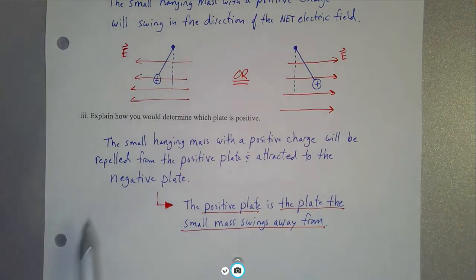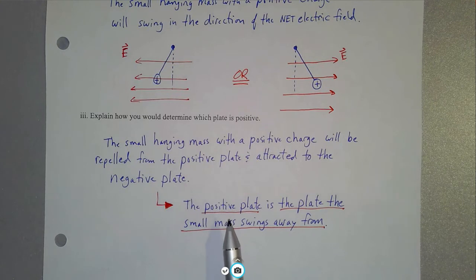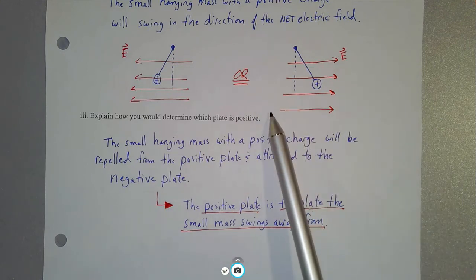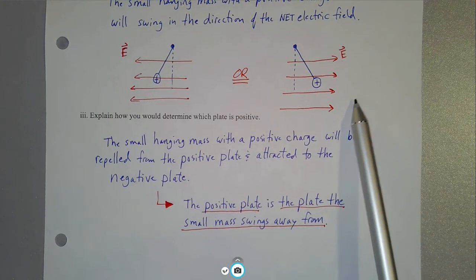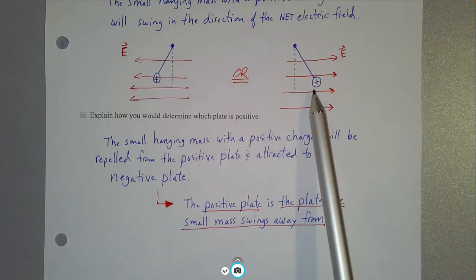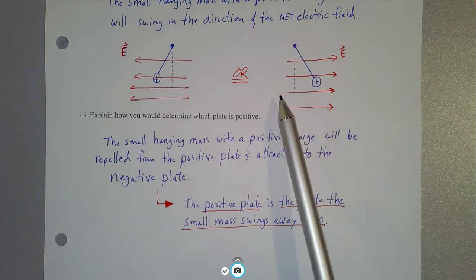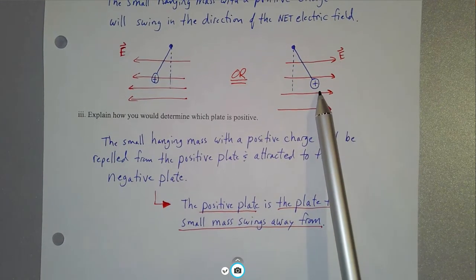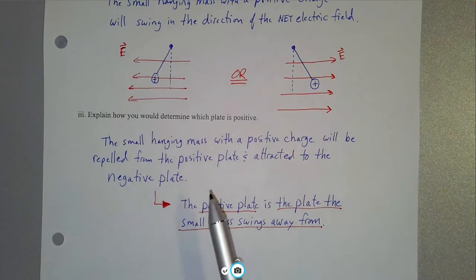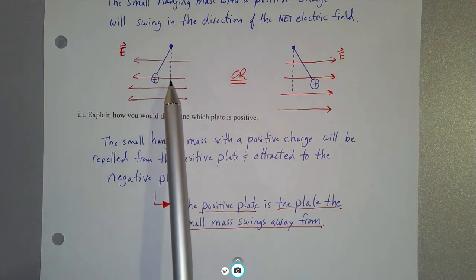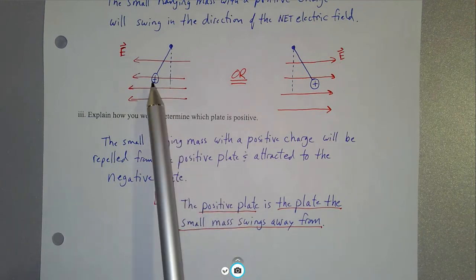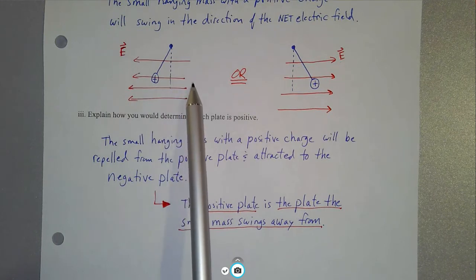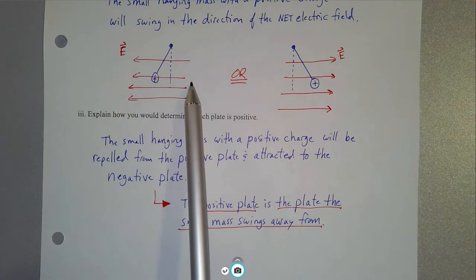To determine which plate is positive: electric field lines go away from positive charges and toward negative charges. So if the object swings to the right, it's swinging away from the positive plate, meaning the positive plate is on the left. If we find experimentally that the hanging object swings to the left, the positively charged plate must be on the right.